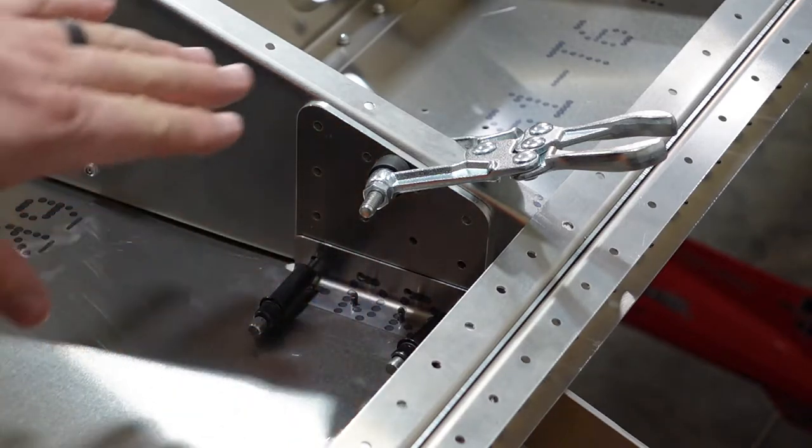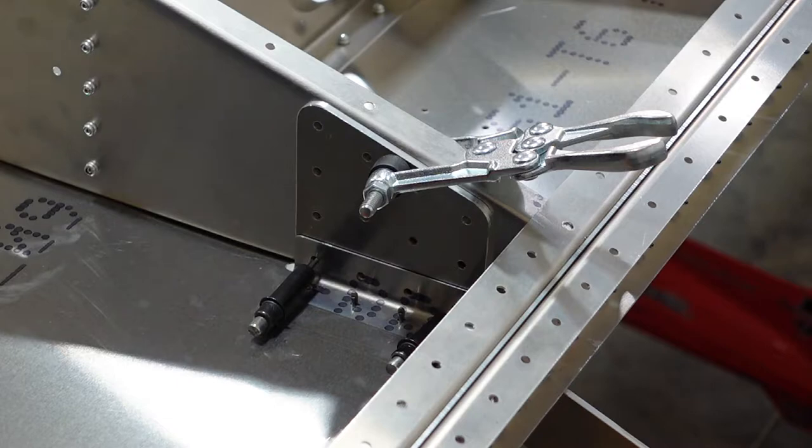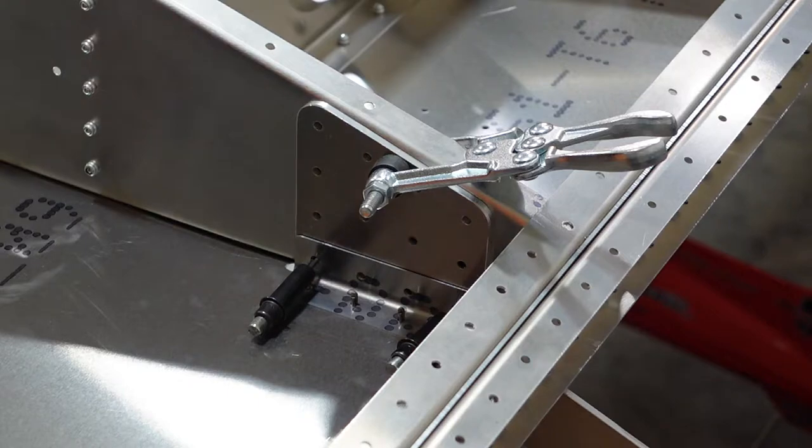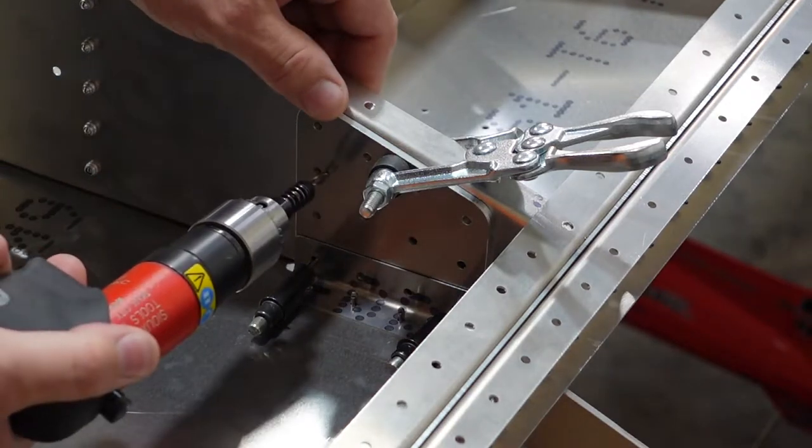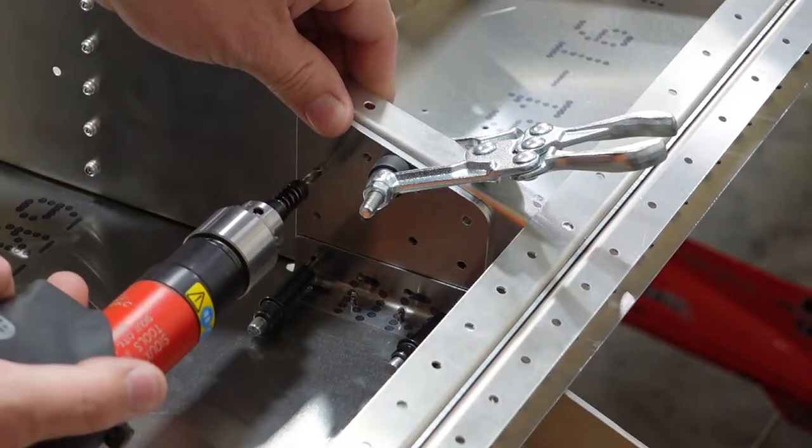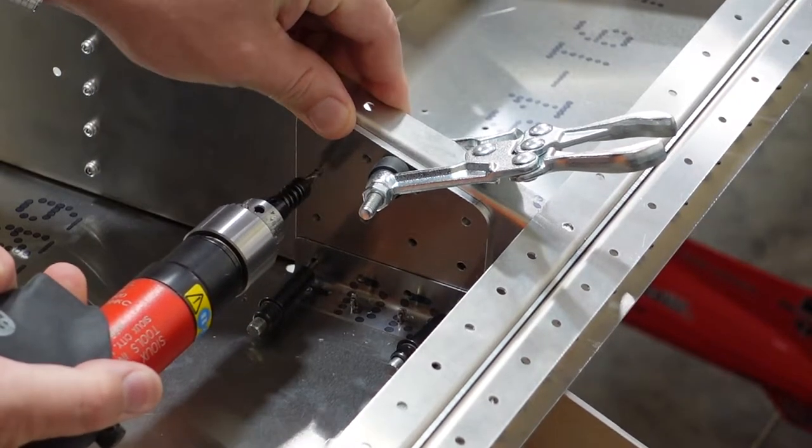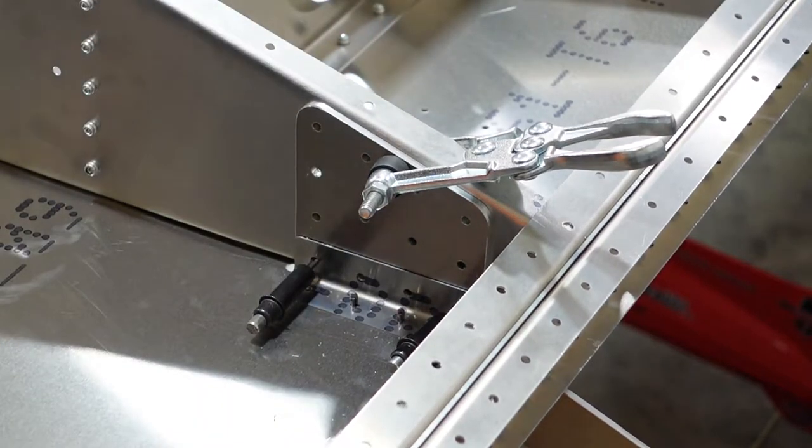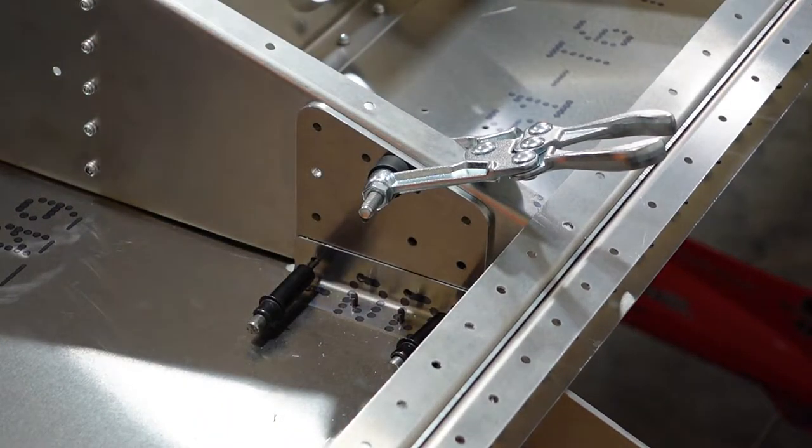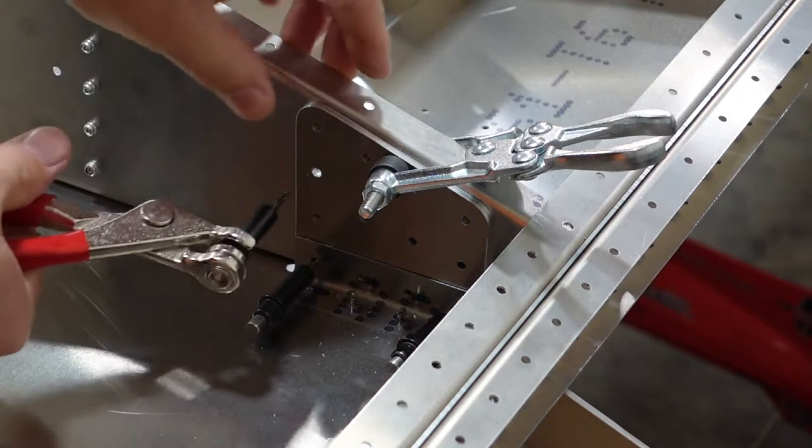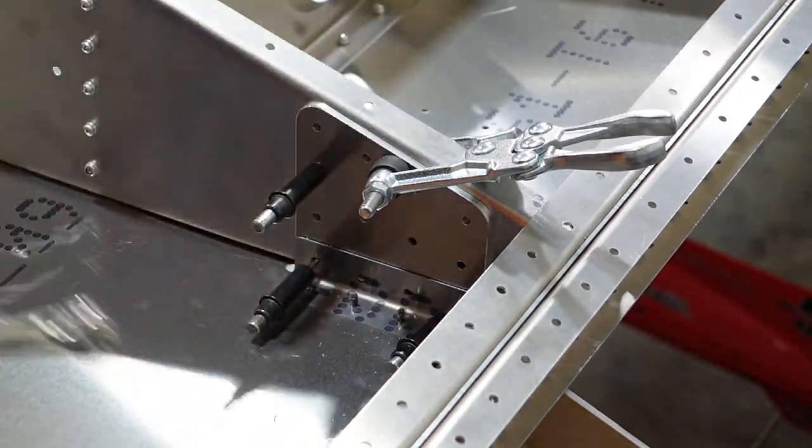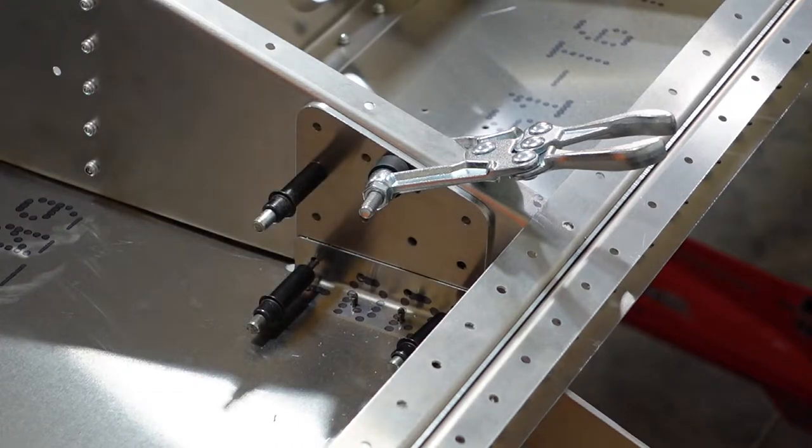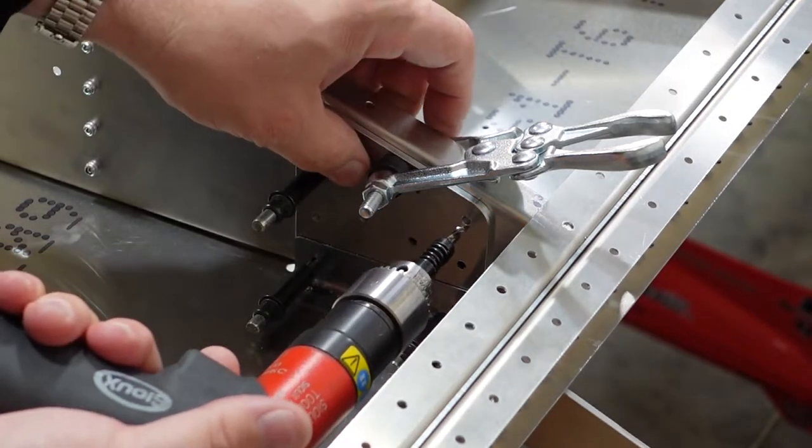Once I get two more holes drilled all the way through, we'll be able to have this Clico permanently. I am going to go right for the A5 rivet size because I don't want to wobble a hole out. We'll go ahead and drill that through right now.